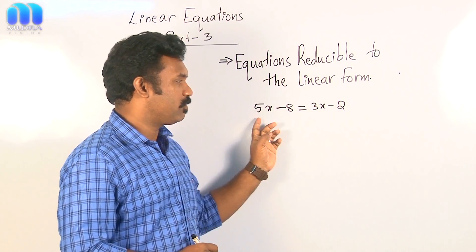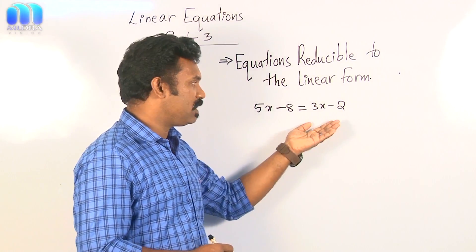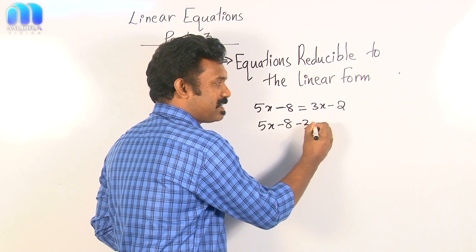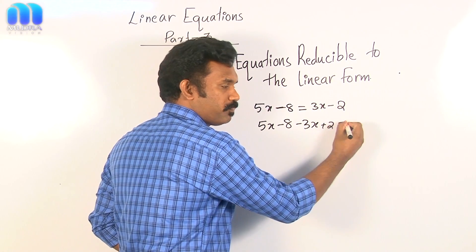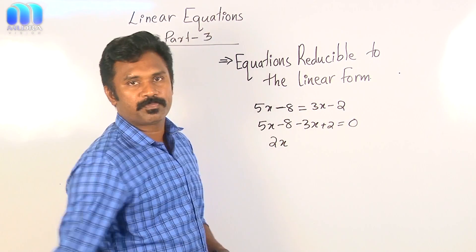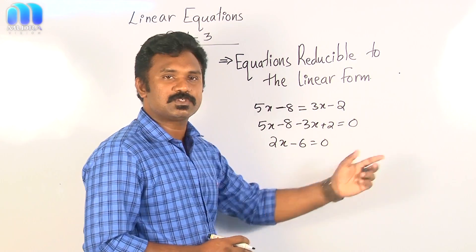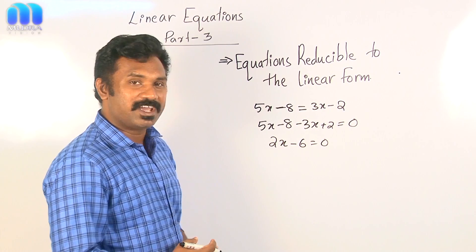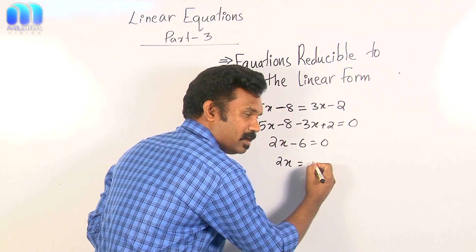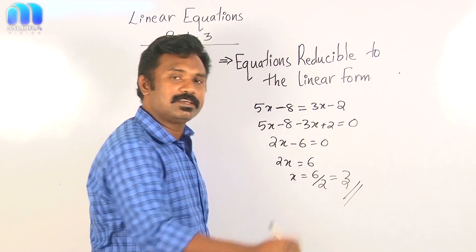Now another example: 5x minus 8 equal to 3x minus 2. Shifting 3x and minus 2 to the left side gives 5x minus 8 minus 3x plus 2 equal to 0, which simplifies to 2x minus 6 equal to 0. It is now in standard form. Shifting the constant to the right side: 2x equals 6, so x equals 6 divided by 2, which is 3. Therefore x equal to 3 is the solution.